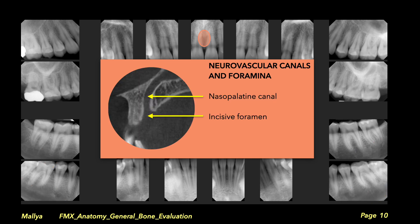Images of the nasopalatine canal and incisor foramen are projected in the anterior maxilla in the midline. Note that there is considerable variation in the size of the incisor foramen, and often, similar to the mental foramen, it is superimposed over the roots of the adjacent teeth and can be mistaken as apical periodontal pathology. The presence of an intact lamina dura and periodontal ligament space around the incisor roots will establish that the superimposed radiolucency is anatomic in nature.